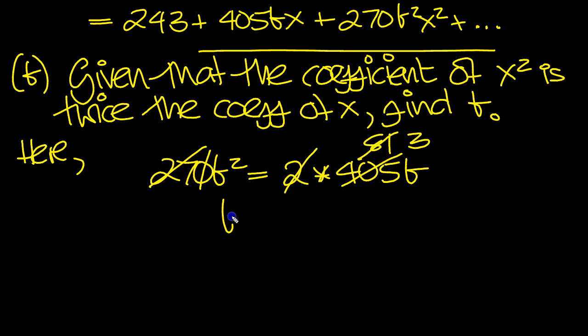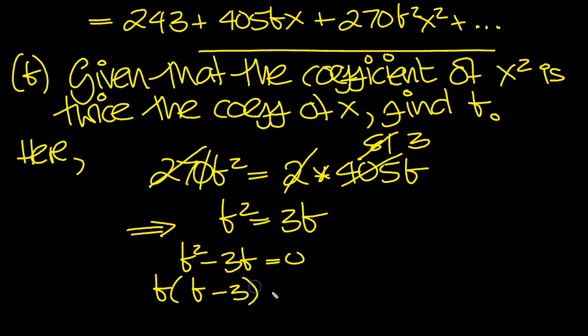So b squared is equal to 3b. So that tells us then that b squared minus 3b equals 0. Factorize out a b, and we get b minus 3 equals 0.